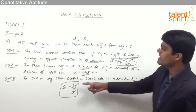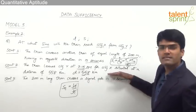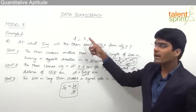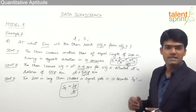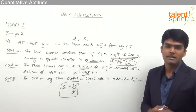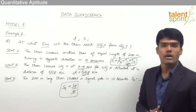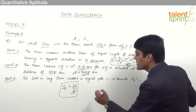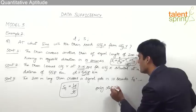With statement 2 giving the distance and statement 3 giving the speed, these two together can answer the question. Statement 1 is not useful at all. Therefore, the answer is: only statement 1 is redundant.